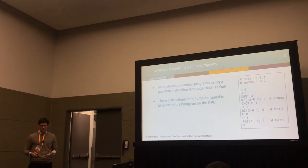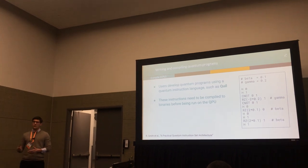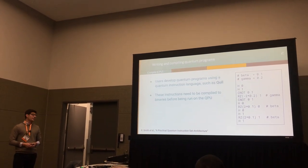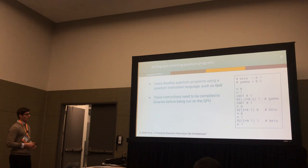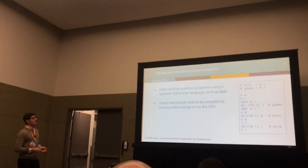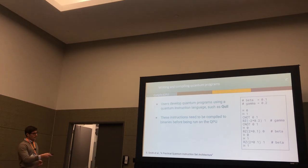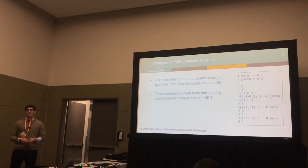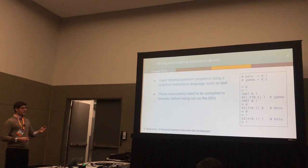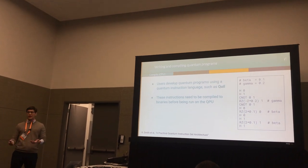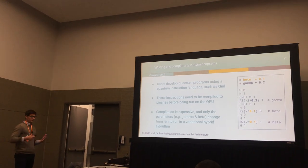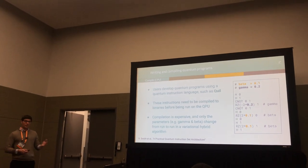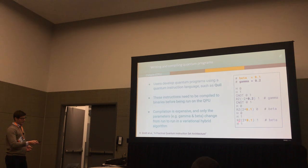We typically express quantum programs using an instruction language which contains things like quantum gates and measurement. An example of such a language is Quill, the quantum instruction language we developed at Evergette Computing. On the right, we have an example Quill program containing single qubit gates like a Hadamard on qubit 0, two qubit gates like a CNOT on qubit 0 and 1, and parameterized single qubit gates like an RZ of negative 0.4 on qubit 1. Before something like this can be run on the QPU, it must be compiled into executable binaries. This compilation procedure is expensive, but for variational hybrid algorithms, the only things that change from run to run are gate parameters like the ones we see here for our RZ gates.